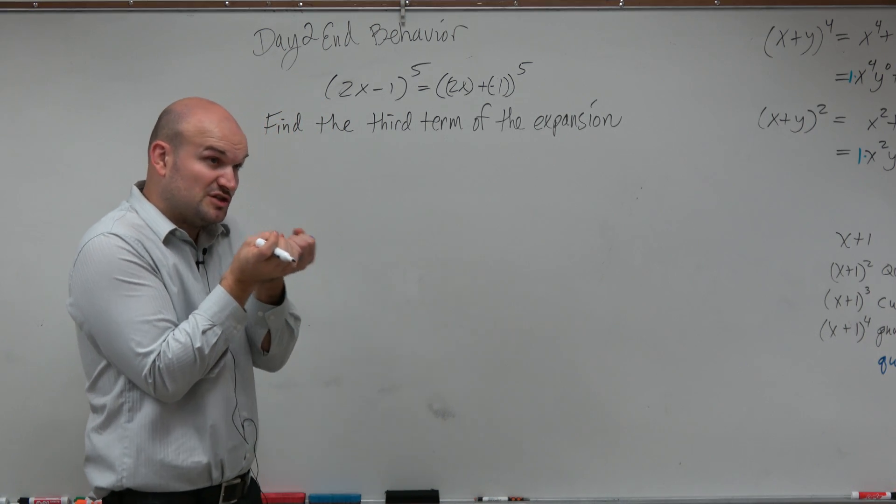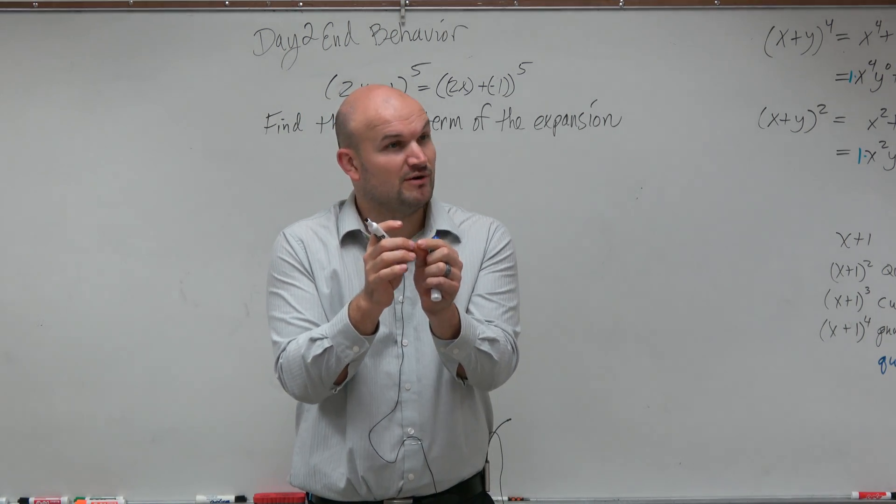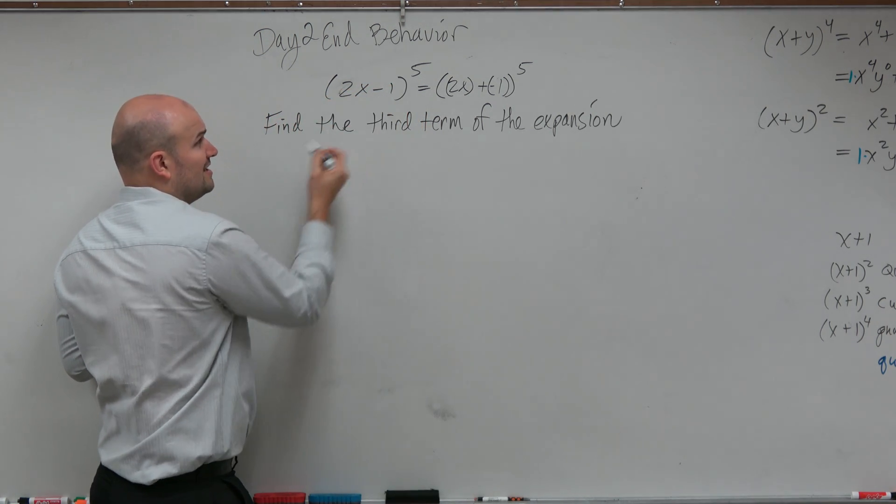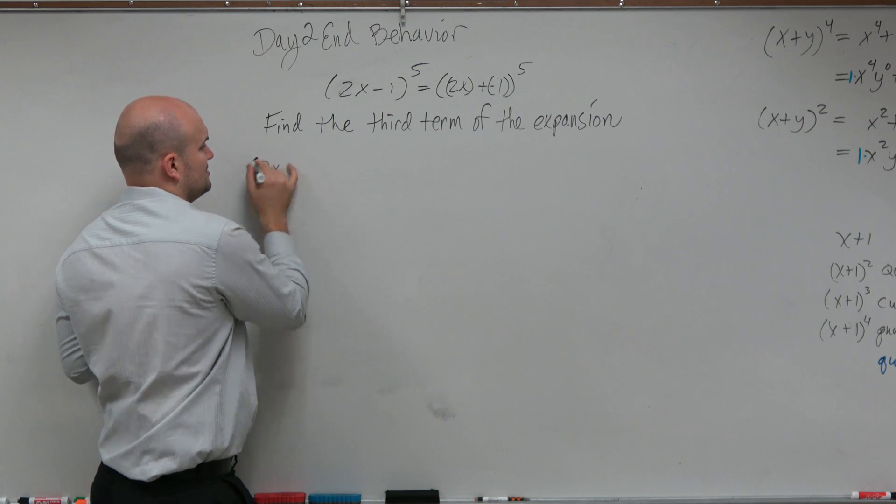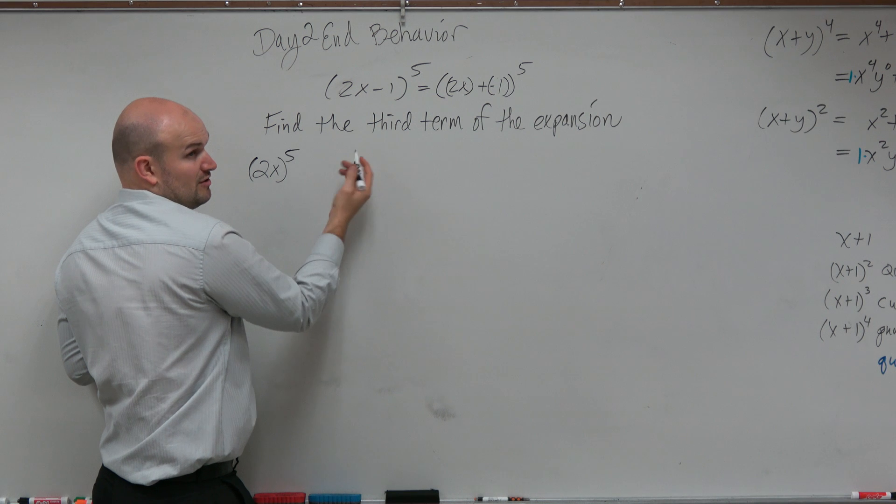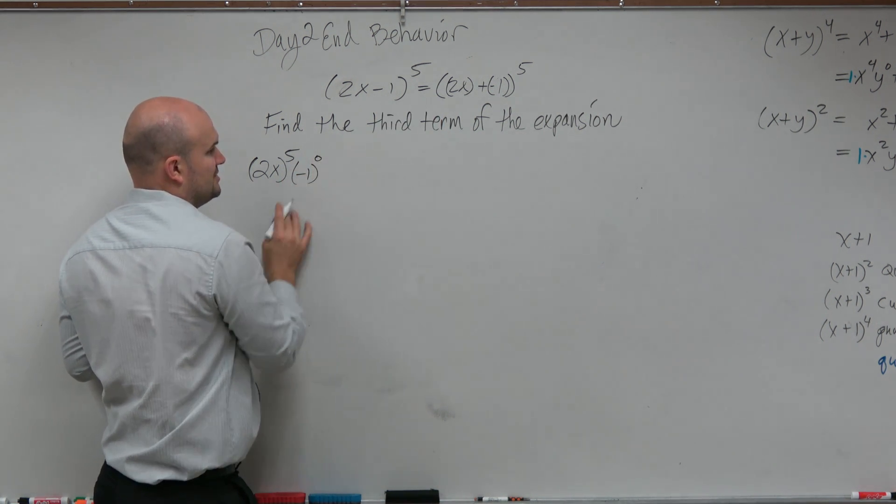So we can say that the first term is 2x. Now, what have we learned in the two that we've done? The first term is always raised to the highest power. What is going to be the highest power of this expansion? Five. So we could say 2x raised to the 5th power. Second term is going to be always starting at zero, so the second term is negative 1 to the zero.